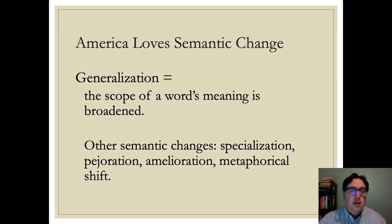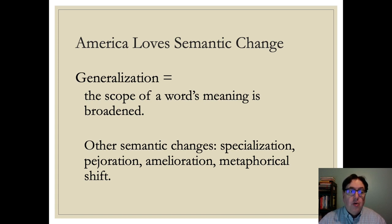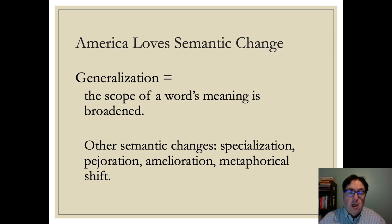Other types of semantic change include the opposite of generalization — specialization, where a word goes from a more general meaning to a more narrow meaning. There's also a process called pejoration, which is where a word takes on a negative meaning, and the opposite of that, amelioration, where a word takes on a positive meaning and acquires positive connotations. There are all sorts of other kinds of changes, including many metaphorical shifts — for example, if you talk about the foot of a mountain, that's a kind of semantic change based on the metaphor of mountains having bodies with feet. Semantic change is a very common process.